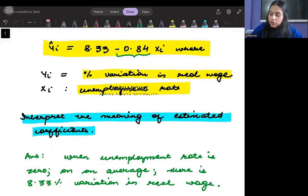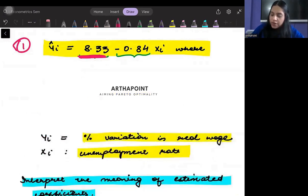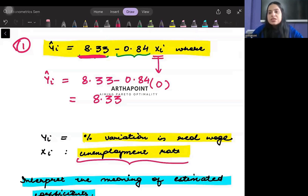So you need to interpret this coefficient and this coefficient. First we'll start with the interpretation of 8.33, which is the intercept. Notice that you will get this 8.33 only when you plug in xi as 0. When I plug this value as 0, I will get yi hat equals 8.33 minus 0.84 times 0, which is 8.33. So it means that when my unemployment rate in the economy is 0, the percentage change in real wage will be 8.33.